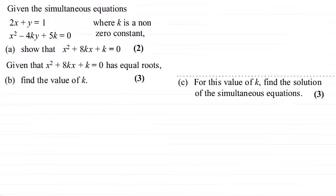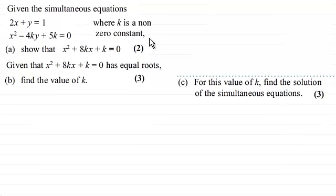For this question, we're given the simultaneous equations 2x plus y equals 1 and x squared minus 4ky plus 5k equals 0, where k is a non-zero constant. In part A, we've got to show that x squared plus 8kx plus k equals 0.